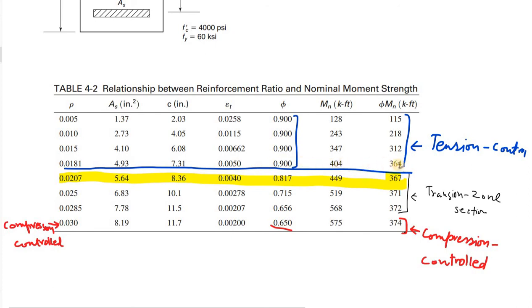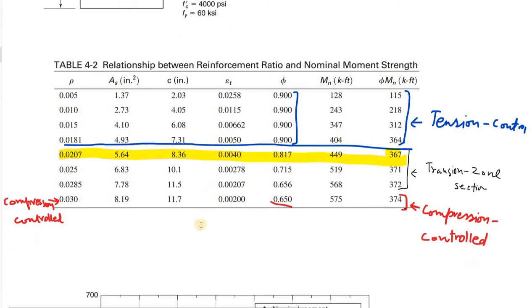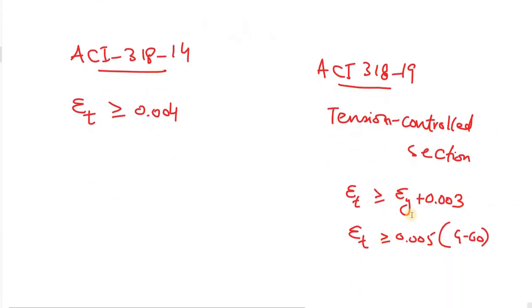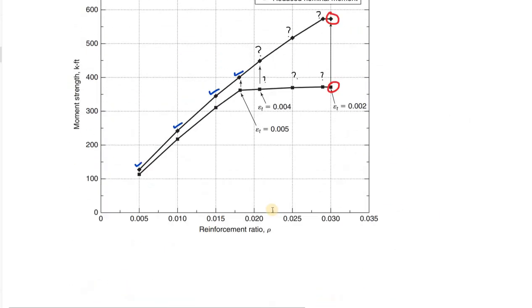The first cross-section is having almost the same M_N as the second cross-section but it has lower area of steel, so it is more economical than the second one. It is this reason that the epsilon requirement of the cross-section has been changed from epsilon_t equal to or greater than 0.004 to epsilon_t equal to or greater than 0.005 for grade 60.